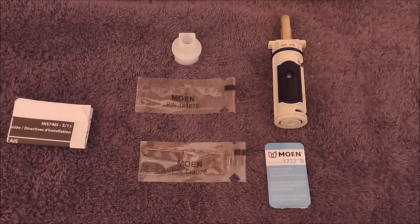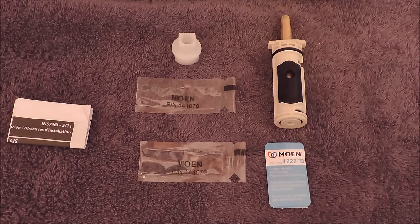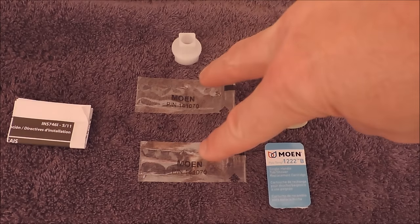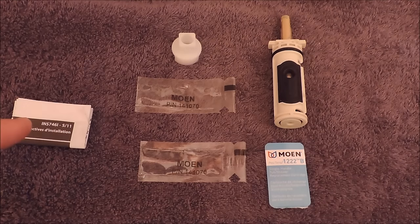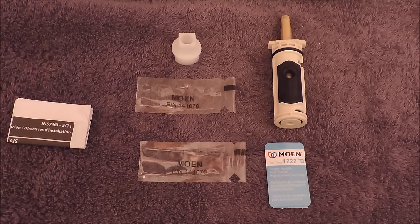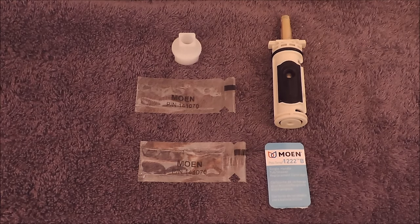Okay, let's do an unboxing. You got the cartridge, you got the Moen label, you got the two sets of plumber grease, you got the plastic twisting tool, and you got the instructions. I'm no plumber, but I don't need these things. I fly by the seat of my pants, baby.